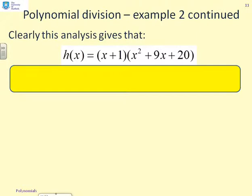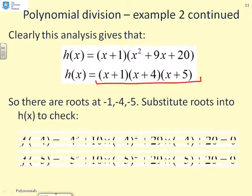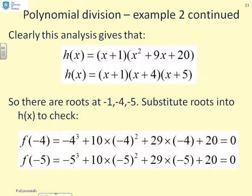So now we want to say, all right, what are the roots of this remaining quadratic? And again, I think you can use the inspection technique covered in the previous video. You can see that 9 is 4 plus 5 and 20 is 4 times 5. And therefore, clearly, this can be written as (x+1)(x+4)(x+5). And so the roots are at -1, -4 and -5. And finally, to be on the safe side, substitute the roots into the original h(x) and check. So here we go. f(-4) = (-4)³ + 10(-4)² + 29(-4) + 20. And you will see that gives you 0. And similarly, you'll see if you substitute in -5, you will get 0. We'd already done -1 because that was how we started the whole problem off.